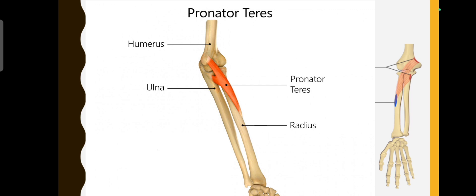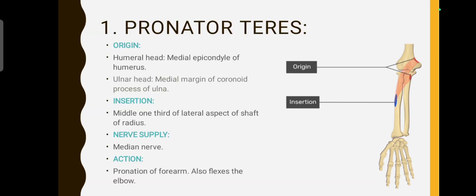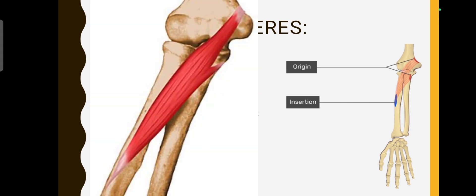Where does it insert? On the radius bone. It inserts on the lateral aspect of the shaft of the radius at the middle one-third.